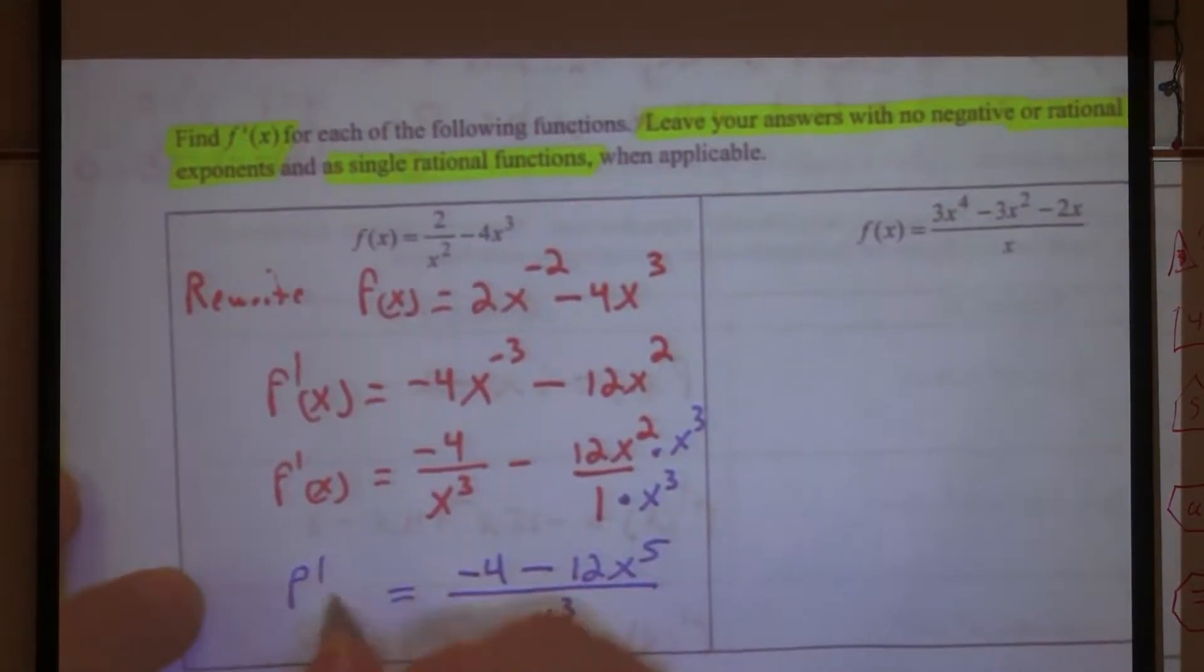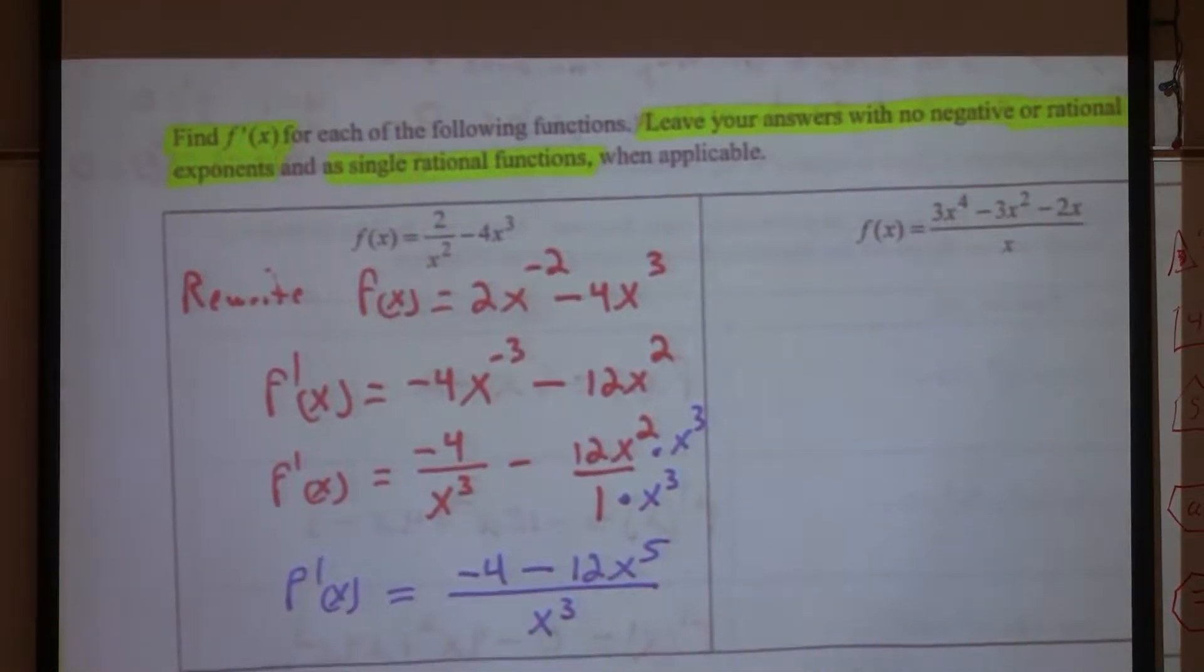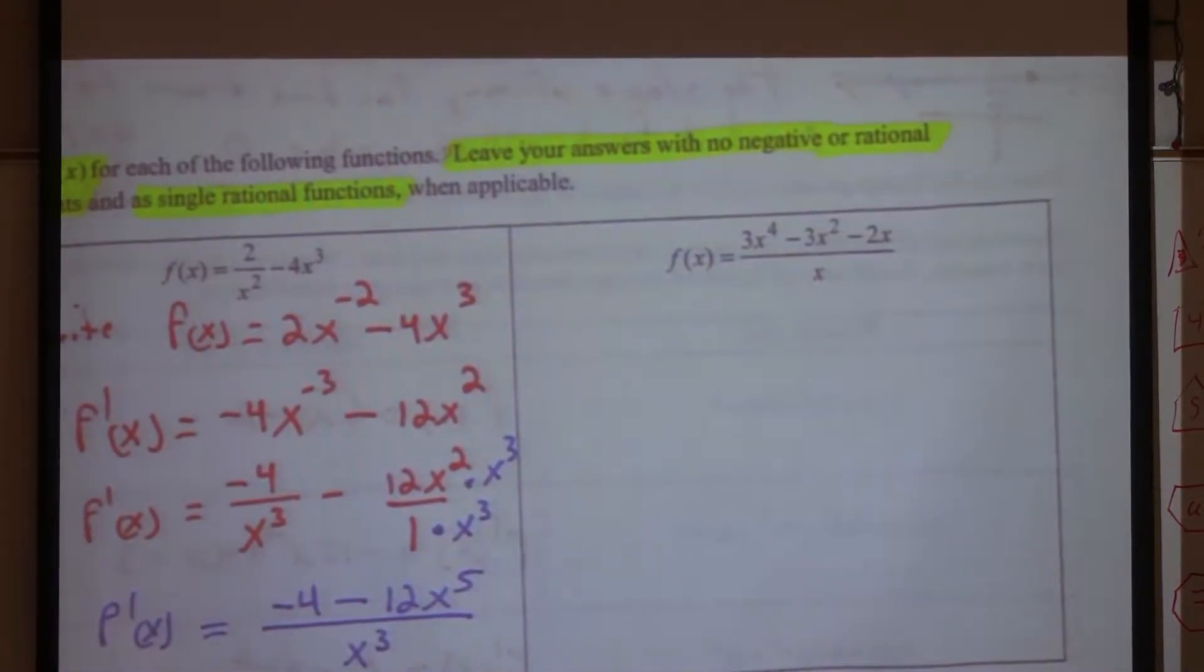So I can make this an x to the third, I'm multiplying it by x to the third. As long as I do it to the top as well, it's like if I were multiplying by a one. Good? So what's my common denominator now? X to the third. On the top I'm going to have negative four minus 12x to the fifth. How did I get five? When you multiply, add the exponents. Is everybody happy now? Yes. I don't have any negative powers, I don't have any rational powers, and it's one single fraction. Beautiful?